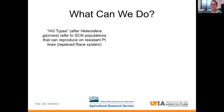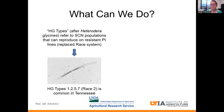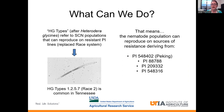So you might have some people telling you that you have a race 2. That actually means you have HG type 1.2.5.7, and that is the most common type that we find in the state of Tennessee. That means that that particular population of nematodes can reproduce on sources of resistance deriving from the following: the 548402 or the Peking, 88788, and 209332.